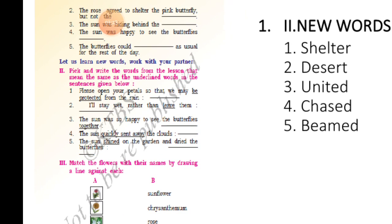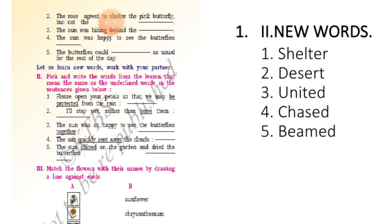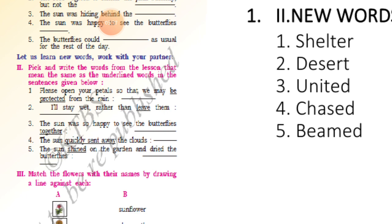In Roman numeral two: pick and write the words from the passage that mean the same as the underlined words in the sentences given below. The first question: 'please open your petals so that we may be protected from the rain' — 'protected' means shelter. The second: 'I'll stay wet rather than leave them' — 'leave them' means desert.